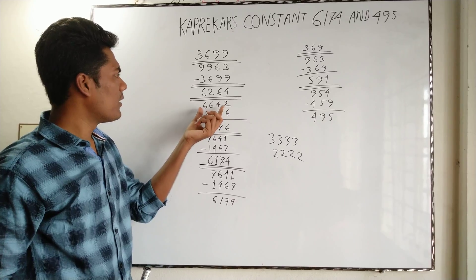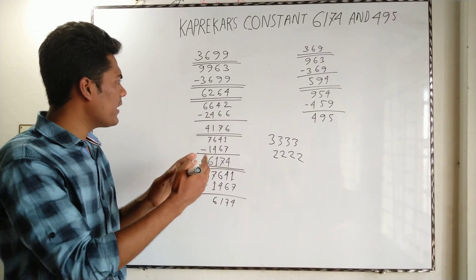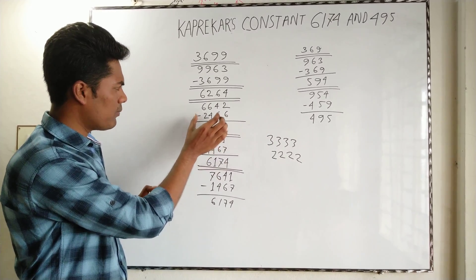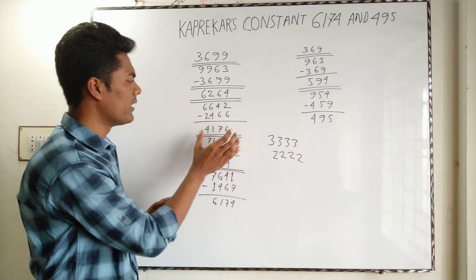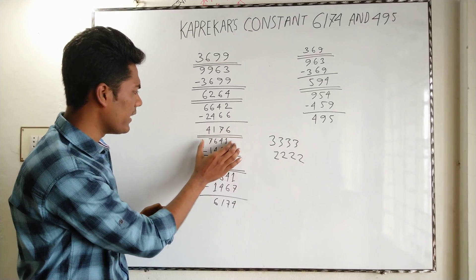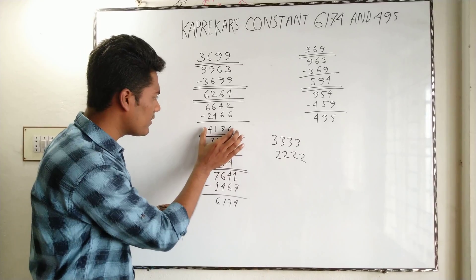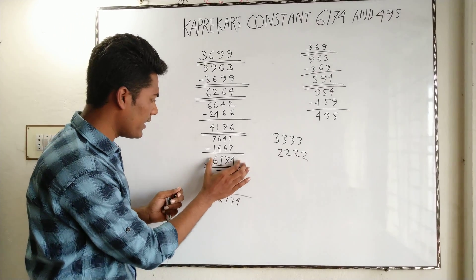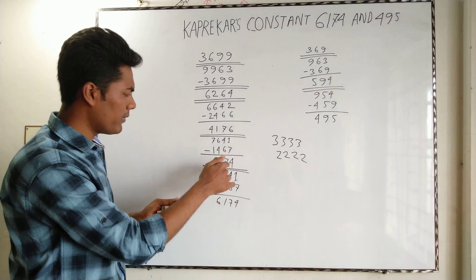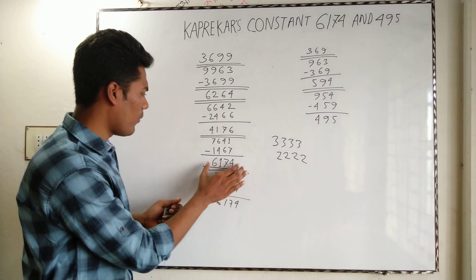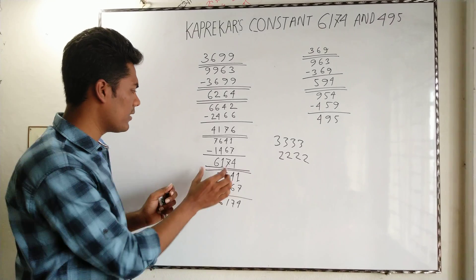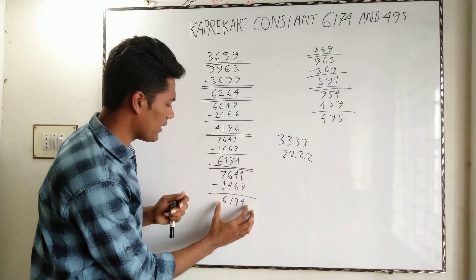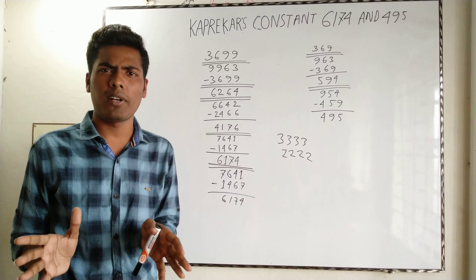We then repeat the process: rearrange the result from largest to smallest, then smallest to largest, and subtract. After a few iterations, we arrive at 6174 — that's the Kaprekar's constant. Once we reach 6174, any further iteration will always return to 6174. This procedure is applicable for any four-digit number.